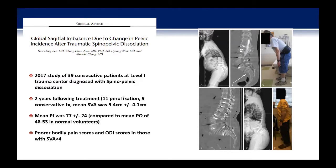The mean PI was 77, compared to a mean PI of 46 to 53 in normal volunteers — suggesting PI increased by about 20 degrees despite treatment. In patients with an SVA greater than four centimeters, there were significantly poorer bodily pain scores and ODI scores at two years. A case from Harborview showed a patient with severe increase in pelvic incidence from a sacral fracture with kyphosis who ultimately needed two separate PSOs to adequately correct their sagittal vertical axis. Ignoring these injuries can have severe long-term implications even when there's no neurologic compromise.